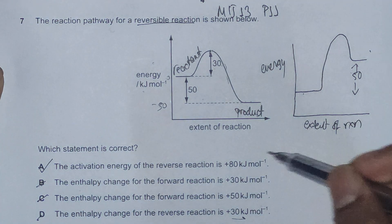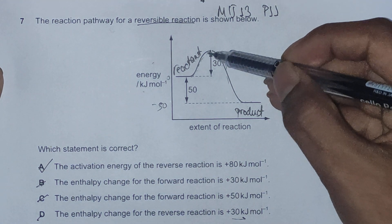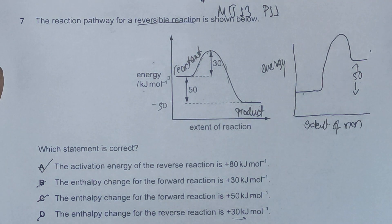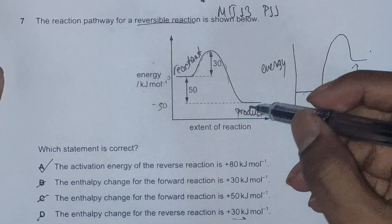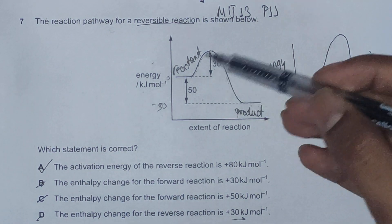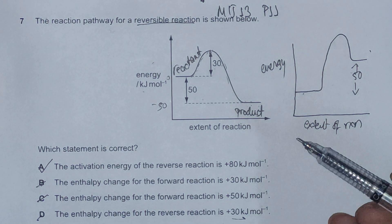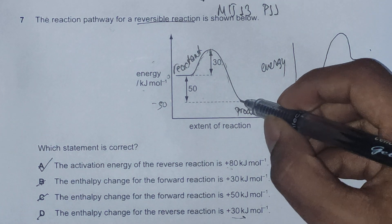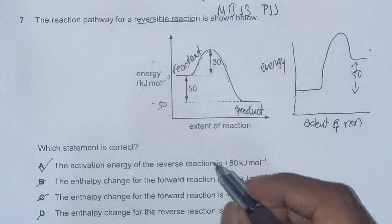The activation energy for the forward reaction is 30 kilojoules per mole — once we reach that energy level, the product can easily form. Going from product to reactant is more difficult: we must absorb energy from the surroundings, and it's harder to absorb than to release energy. For the backward reaction, we start from negative 50 and the barrier height is 30, so the total activation energy for the backward reaction is 50 plus 30 equals 80 kilojoules per mole, confirming that A is the correct answer.